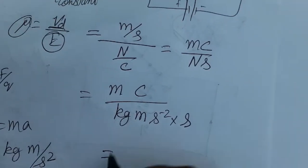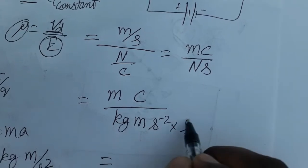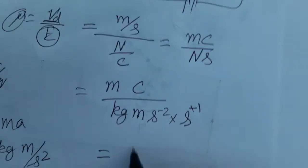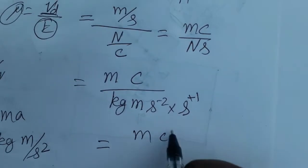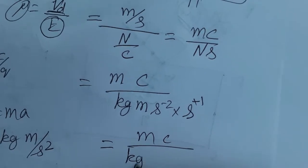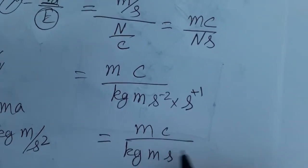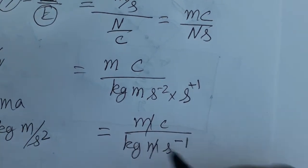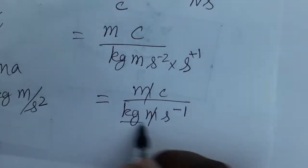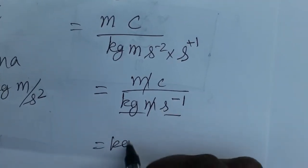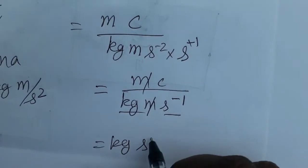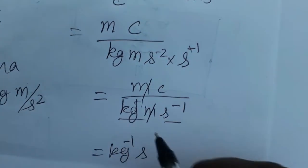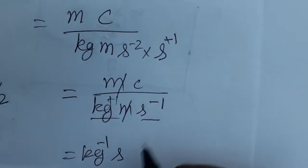Now we simplify: substituting Newton as kg·meter·second⁻², we get meter·Coulombs over kg·meter·second⁻²·second. The exponent becomes −2 + 1 = −1. The meter in the numerator and denominator cancel, giving us Coulombs per kg·second⁻¹.